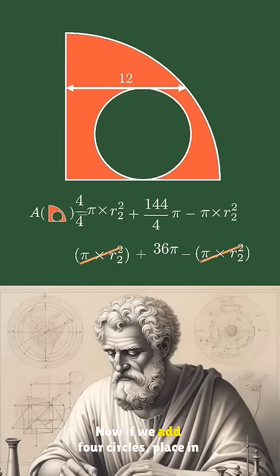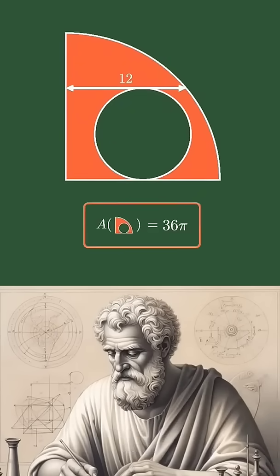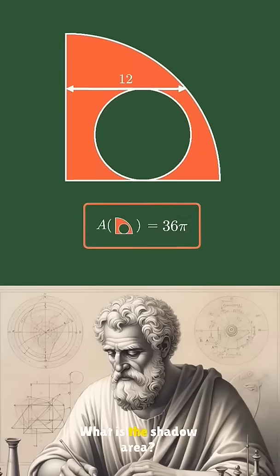Now if we add 4 circles placed in the same quarter circle, what is the shaded area?